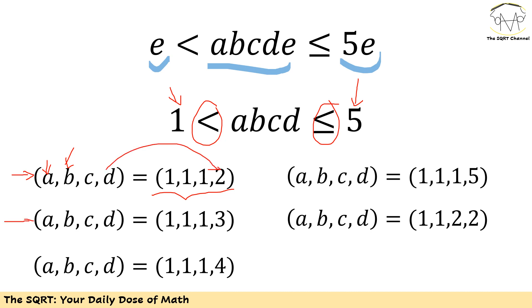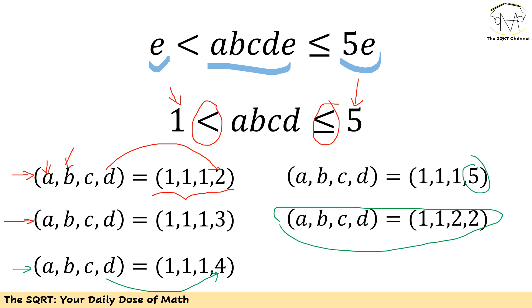The other cases are: (1,1,1,3), (1,1,1,4), and (1,1,1,5) — since d can be up to 5. We also have (1,1,2,2), where the product is 1·1·2·2 = 4, which is less than or equal to 5. We cannot use (1,1,2,3) because 1·1·2·3 = 6, which exceeds 5. So we have exactly five cases.